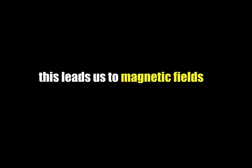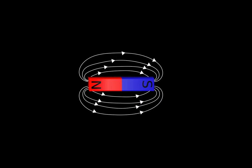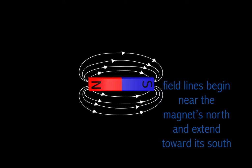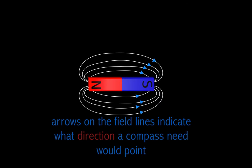This leads us back to our magnetic fields, and this is an image of what those magnetic fields look like. As you can see, they're coming out of the north. Field lines begin near the magnet's north and extend towards the south. Arrows in the fields indicate the direction a compass needle would point.